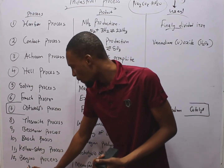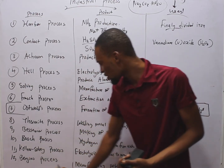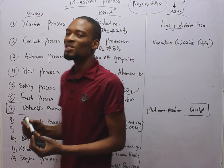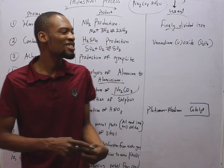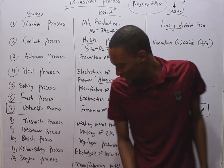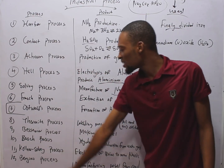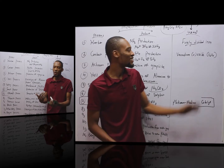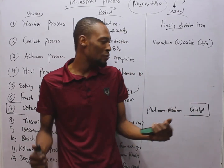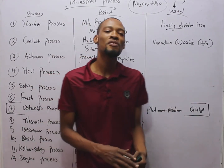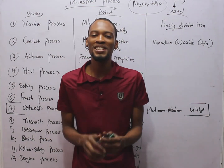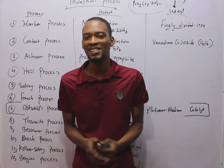The Bergius process is used in the manufacture of petrol from coal. So which industrial process is used to manufacture petrol from coal? It is simply the Bergius process. These are the top industrial processes you should know about. I hope you found this very helpful. I am Flash Isaac — don't fail to share this with your friends.